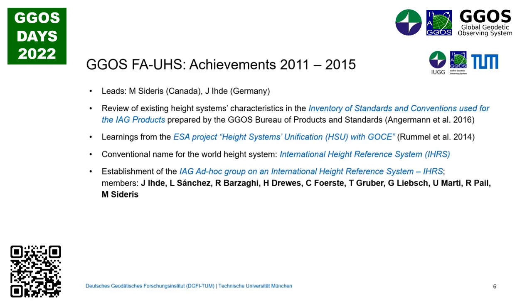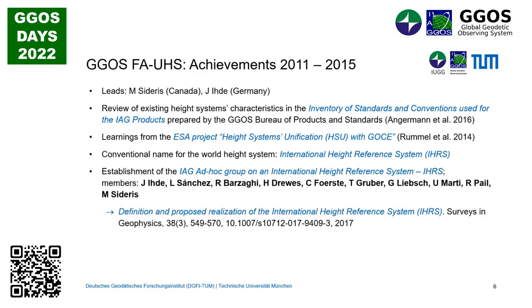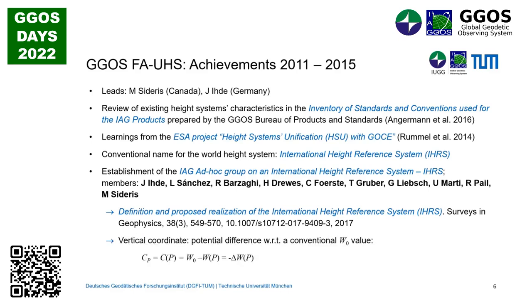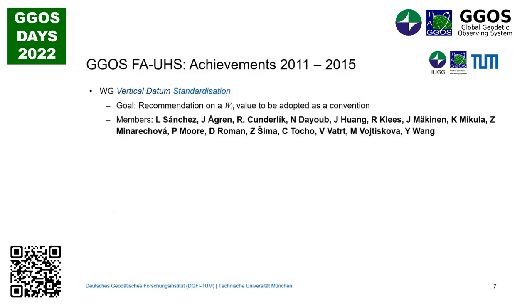The names of the colleagues working in this ad hoc group are listed here, because again, without humans this is not possible. The discussions, conclusions, and recommendations of this ad hoc group are contained in the paper 'Definition and Proposed Realization of the International Height Reference System'. In that paper it is stated that the primary vertical coordinates are geopotential differences given with respect to a global conventional W0 value, which decides which of the infinite number of equipotential surfaces in the gravity field should be the reference level.